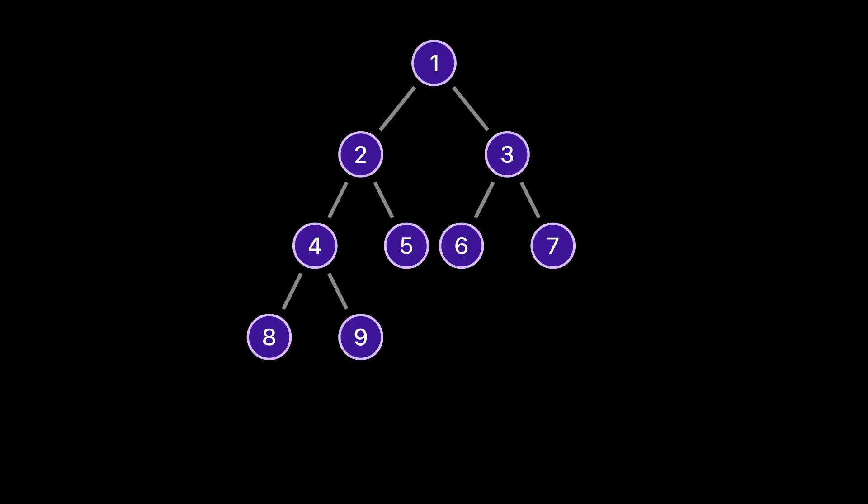There are several types of binary trees. Here are some examples. A binary tree is called full if every node has 0 or 2 children.